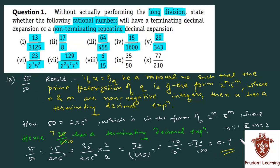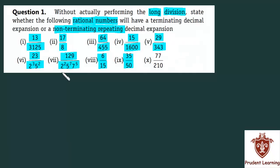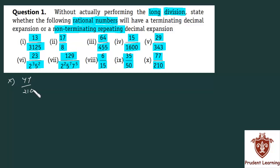This completes our solution. We have completed up to the ninth section. Let us now move on to the last section. The rational number given is 77 upon 210. The given number is in the form of p by q where p and q are integers and q is not equal to 0, which implies that 77 upon 210 is a rational number.